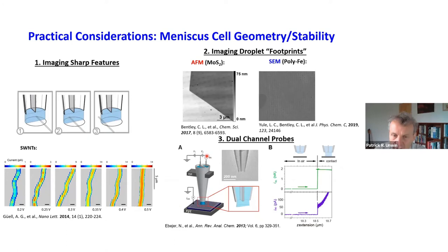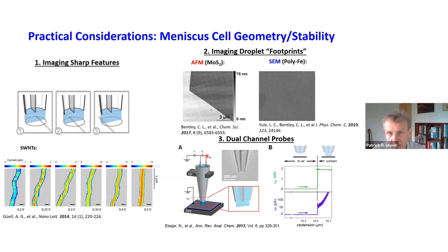It might be useful to go through a few practical considerations, because people new to this technique often ask about meniscus stability, wetting on the surface, and the quasi-reference counter electrode. I'd like to show a few examples demonstrating that this is indeed a very robust technique that can be used in a fairly straightforward manner.